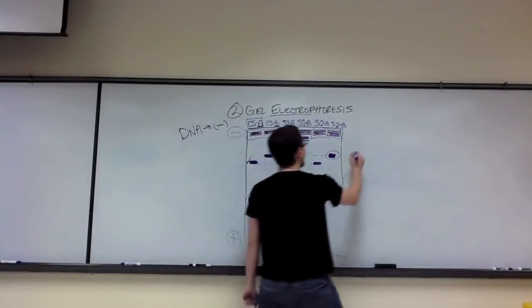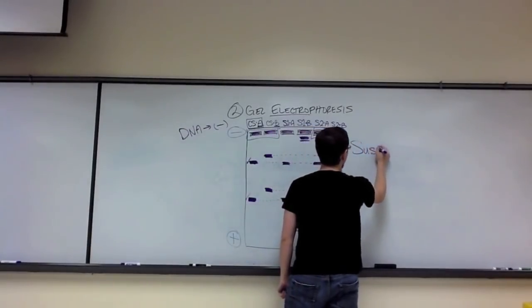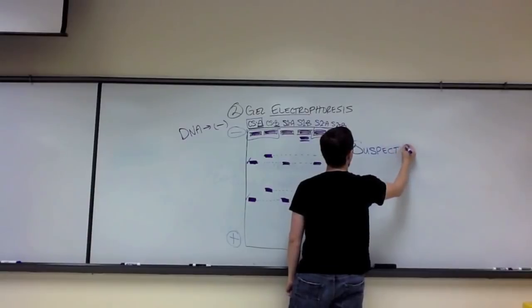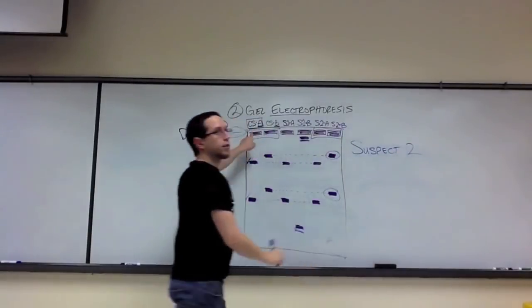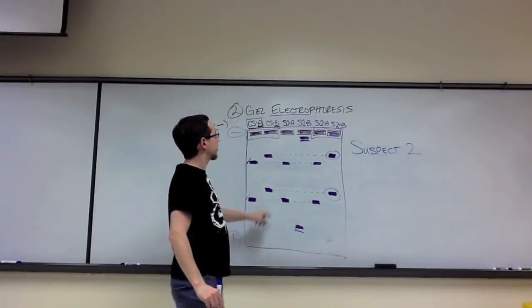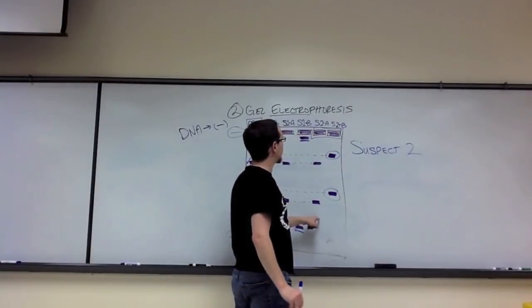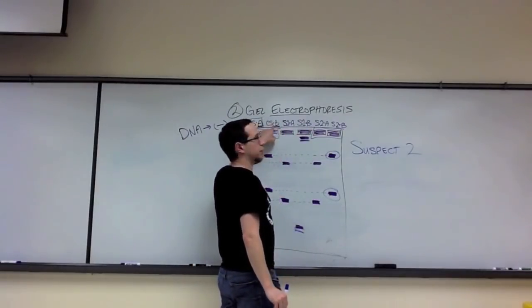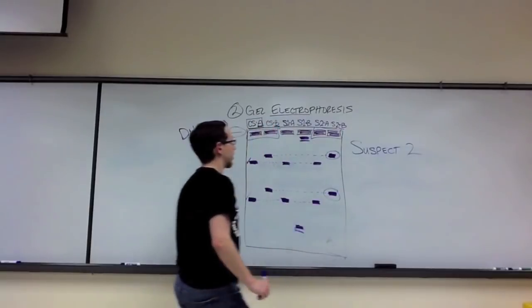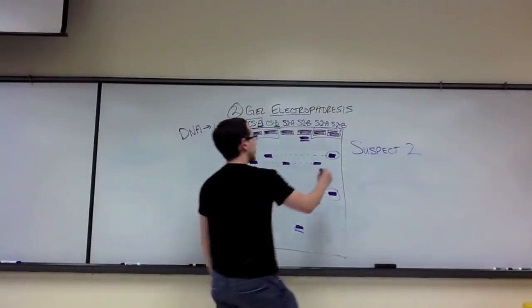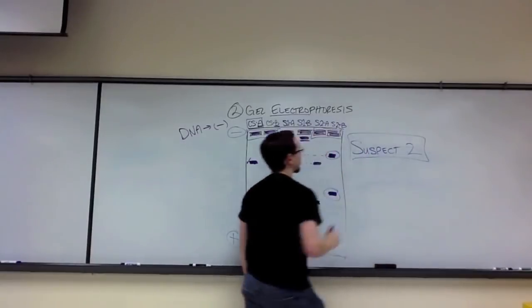In this particular instance, suspect 2 matches both crime scene digested with A's lane with its own digested with A lane, and crime scene digested with B's lane with its own digested B lane. And so, in this case, suspect 2 is the perpetrator.